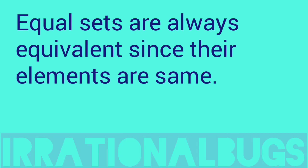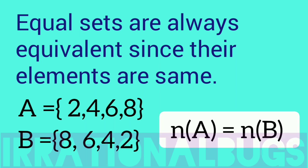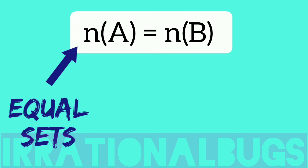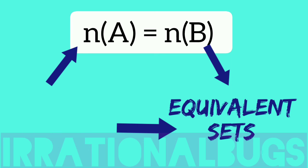Further, this is very important. Equal sets are always equivalent since their elements are same. If I take two sets, A and B. Elements A: 2, 4, 6, 8. Four elements. B has 8, 6, 4, 2. Again, four elements. A and B, both sets have same elements. This is why the cardinal number is same. And which sets have same cardinal number, they are equivalent. Equal sets have same cardinal number, so equal sets are equivalent.